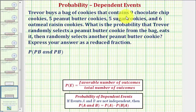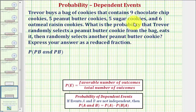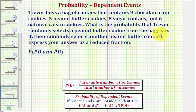Trevor buys a bag of cookies that contains nine chocolate chip cookies, five peanut butter cookies, five sugar cookies, and six oatmeal raisin cookies. What is the probability that Trevor randomly selects a peanut butter cookie from the bag, eats it, then randomly selects another peanut butter cookie?